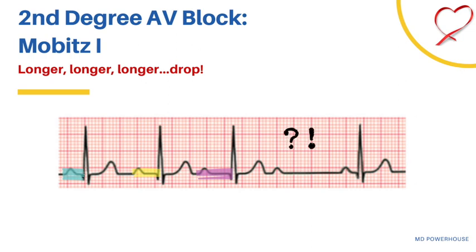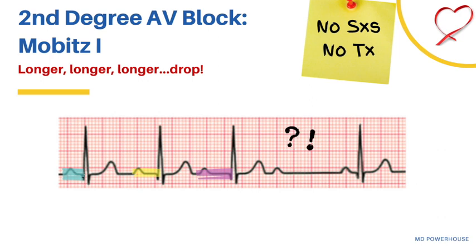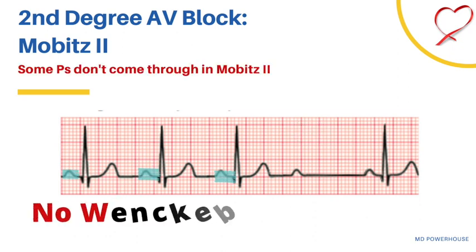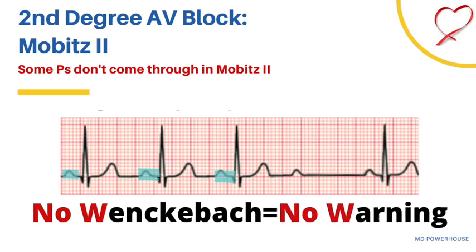Mobitz type 1 or Wenckebach is also typically asymptomatic and does not require treatment. In Mobitz type 2, there is no progressive prolongation of the PR interval — just a sudden dropped beat. The constant PR intervals are highlighted in blue. The mnemonic is: no Wenckebach, no warning. In Mobitz type 1, Wenckebach means there is a warning because the PR interval gets progressively longer. But for Mobitz type 2, no Wenckebach means no warning — the PR interval stays the same and then there is a sudden dropped beat.